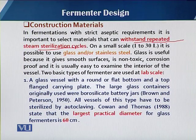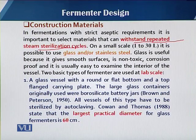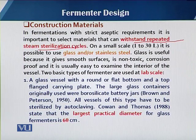For lab-scale fermenters, sterilization is done ex-situ by placing the fermenter inside an autoclave. For pilot-scale and industrial-scale, in-situ sterilization is used. The sterilization process involves heat and pressure — temperature is normally raised to 121°C at 15 pounds per square inch pressure. There are two major material options: glass and stainless steel.